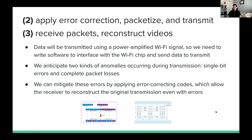Once we have those videos, the next step is getting them over the wireless link. We're transmitting over a power-amplified Wi-Fi signal, so we had to write software to interface with the Wi-Fi chip. Over this link, we expect two kinds of anomalies: single bit errors where bits flip from 0 to 1 or vice versa, and complete packet loss where sections of data go entirely missing. We needed to apply error correcting codes to the data, allowing the receiver to reconstruct the original transmission even in the face of those errors.